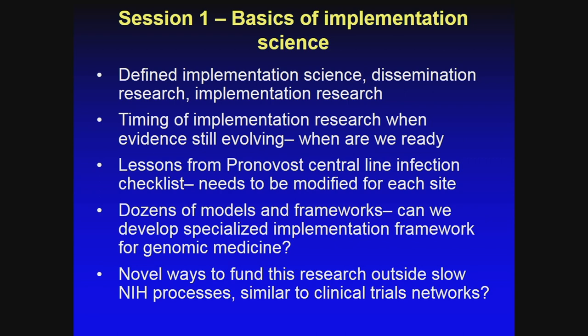We heard that there are dozens of models and frameworks — 106 or something. Can we work to develop a specialized implementation framework for genomic medicine? IGNITE is doing some of the work; CSER and eMERGE are doing some work, and we need to make sure those two get aligned. Is it RE-AIM? Is it CFIR? Maybe it's about what are the right processes at each place. We need to think about novel ways to fund this research outside of the slow NIH processes — maybe a clinical trials network kind of approach.